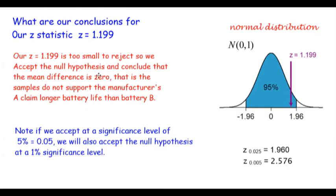We are accepting the null hypothesis - there's no difference in the mean battery lives of the samples. Basically, the manufacturer cannot claim from these sample sizes and values that his battery will last longer than battery B.